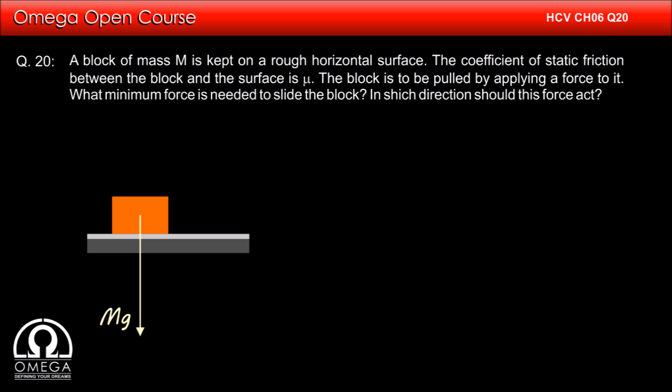Gravitational force of mg acts on the block in vertically downward direction. From our discussion on angle of friction, we know that the block will start sliding when the resultant of the applied force and this gravity makes an angle phi with the normal, where phi is tan inverse mu.